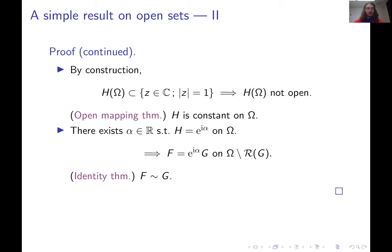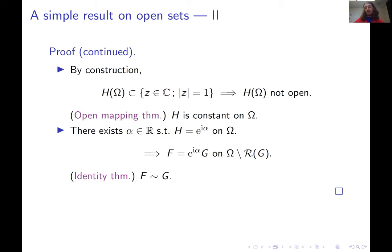That is the proof. I really like this theorem and its proof for three reasons. First, the proof is very short. Second, while it's short, it combines three interesting insights from complex analysis — Riemann's theorem on removable singularities, the open mapping theorem, and the identity theorem. Third, the statement is sufficiently interesting: if you take any open subset of the time frequency plane, no matter how small, you can recover any square integrable signal from the Gabor transform magnitude on that open subset.